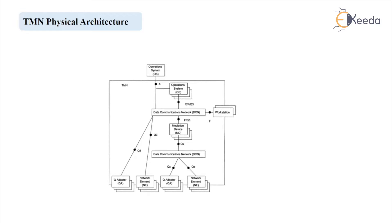What is the equivalent functional block? You can say network element, then again Q Adapter, again network element and so on. The operational system could have its operation function as well as meditation device which does filtering of the information. As we are all familiar with the work of all these blocks, these works are the same as that of the functional architecture block. For example, the meditation function block will try to do the filtering of the data which comes from the operation block and which you require to transmit towards the other block. So that will do the same function.